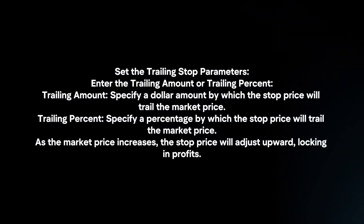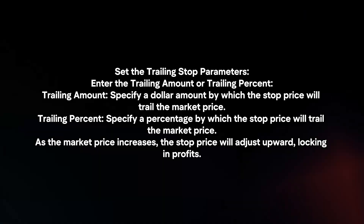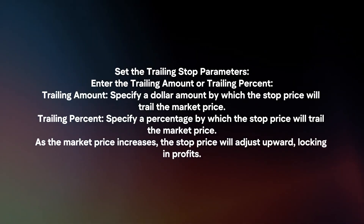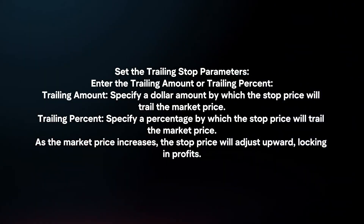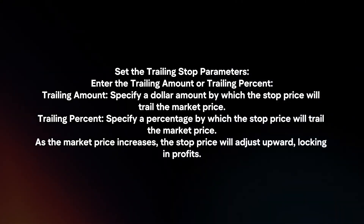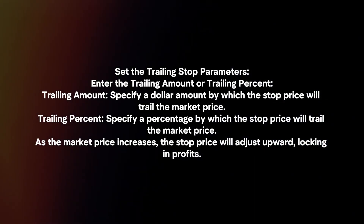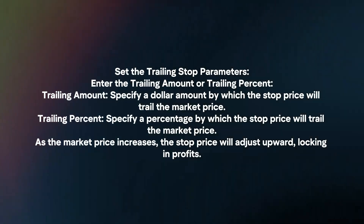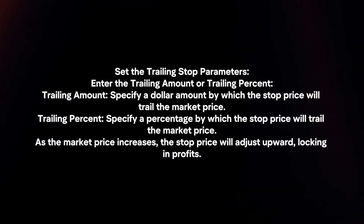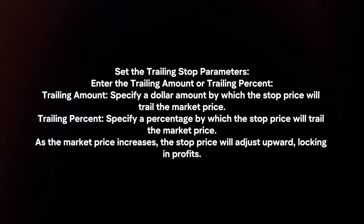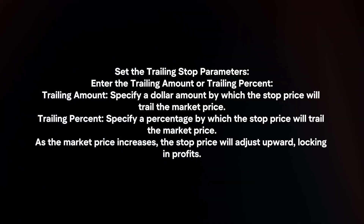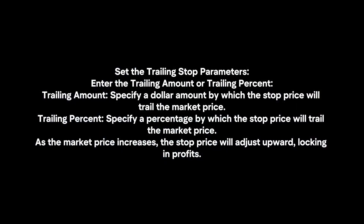Set the trailing stop parameters. Enter the trailing amount or trailing percent. Trailing Amount: specify a dollar amount by which the stop price will trail the market price. Trailing Percent: specify a percentage by which the stop price will trail the market price. As the market price increases, the stop price will adjust upward, locking in profits.